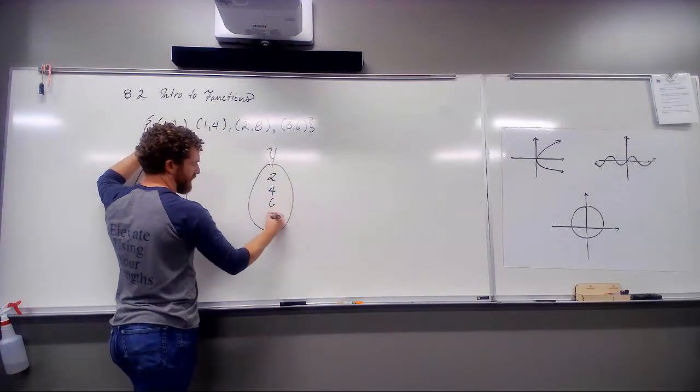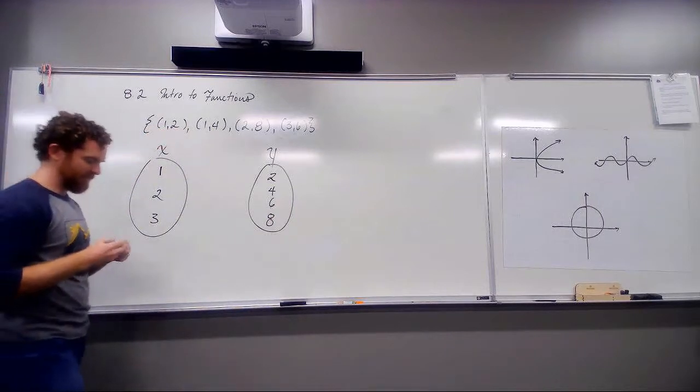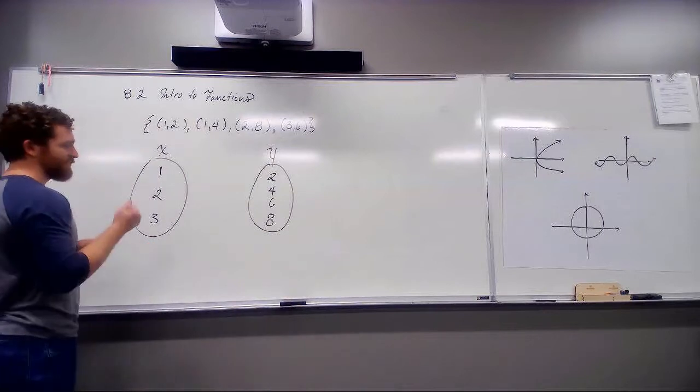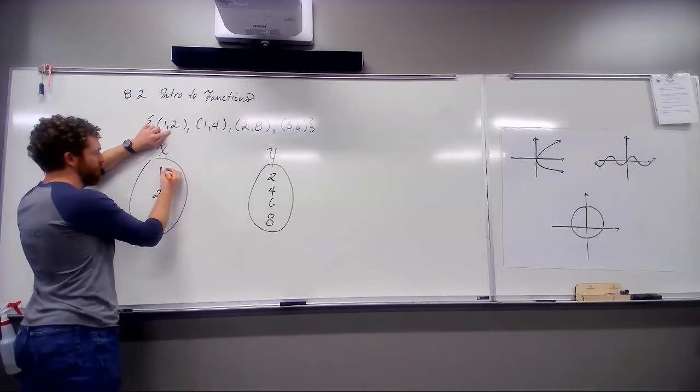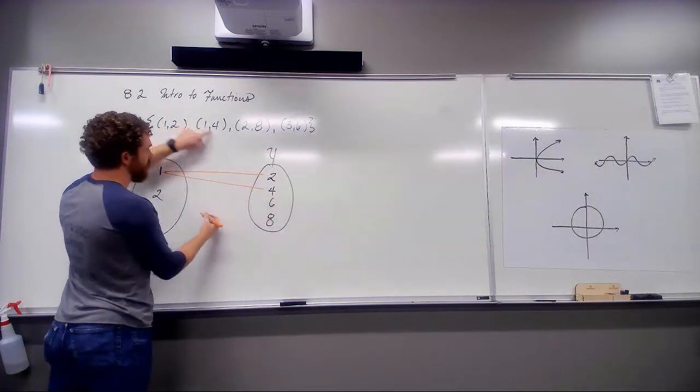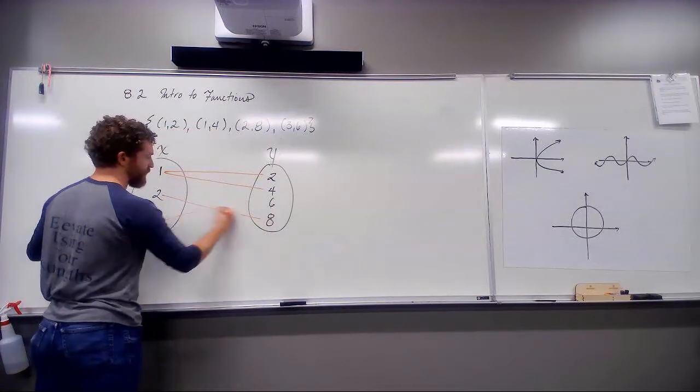Two, four, six, and eight. Again, order doesn't matter. I'm just being really particular about having it in numerical order. So, drawing our lines across, we have one to two, one to four, three to eight, and three to six.